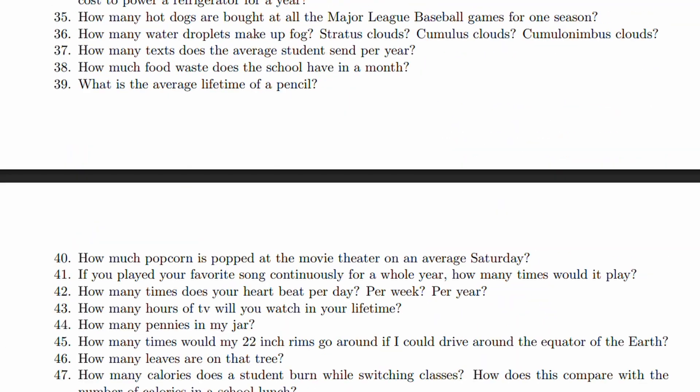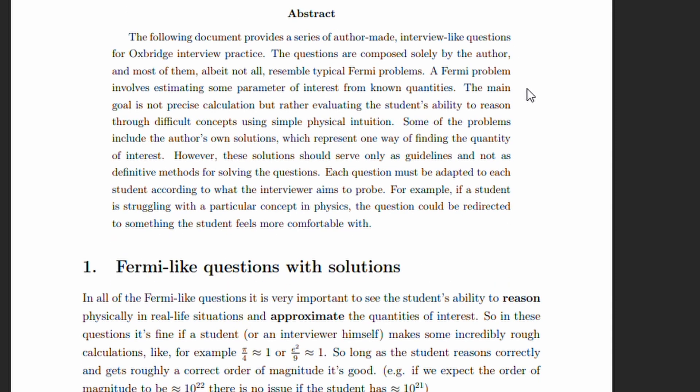Cool. First tip. In estimation or Fermi questions, always round numbers and work in scientific notation. In these types of questions, the interviewers aren't interested in how good you are at long calculations. They care about how you reason and the final order of magnitude. It's also not worth spending too much time on these because there will usually be harder questions coming later. Use quick approximations. g is equal to 10, big G is equal to 7 times 10 to the negative 11, and pi is equal to 3, and so on. Make sure you do know a few key values such as the distance to the sun, the density of water, the radius of the earth, and the mass of the earth.